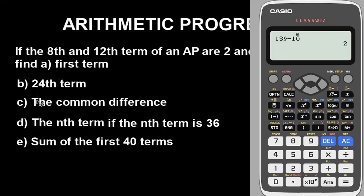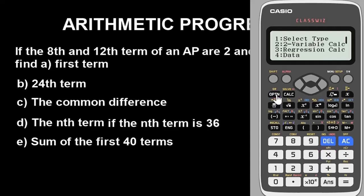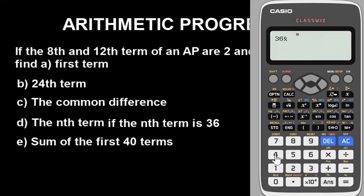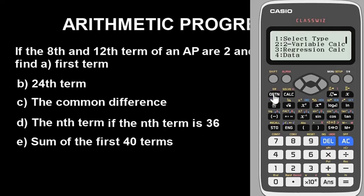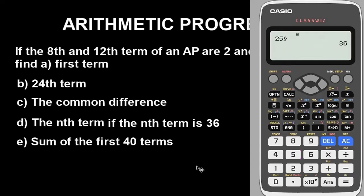For part (d), finding n when the nth term equals 36: press 36 first, then go to option, down to Regression — for n, use option 4 specifically. Press 4 and the result shows n equals 25. To verify: look up the 25th term using option 5 and you get back 36 — confirming the answer is correct.